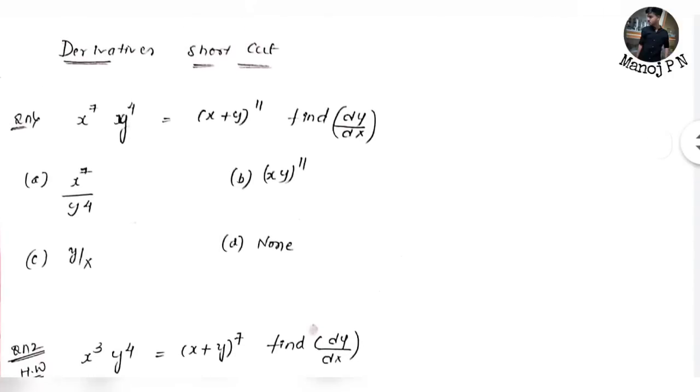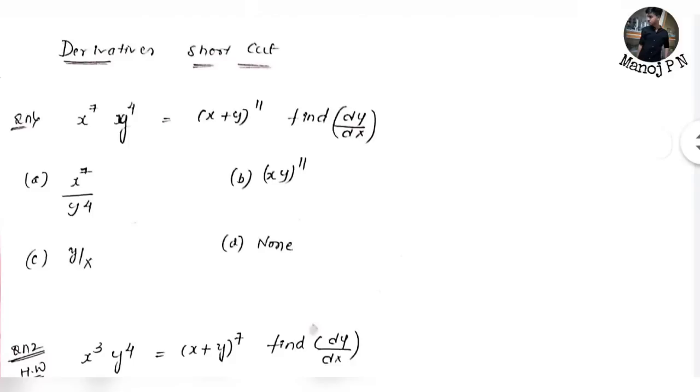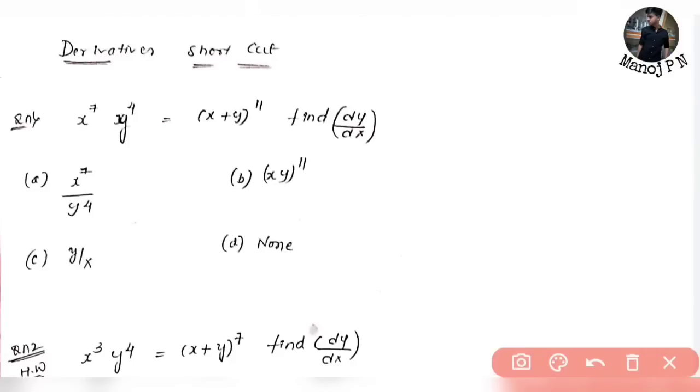All the best for your examination, guys. Do well. Without any further delay, look at the question: x to the power 7 multiplied by y to the power 7, which is equal to (x plus y) to the power 11. Find dy by dx. This is the question.